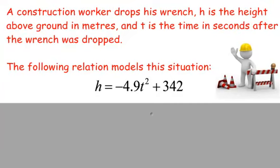H is the height above ground in meters, and T is the time in seconds after the wrench was dropped. Now it says the relation models this situation. The following relation models this situation, and here it shows you H is equal to negative 4.9 T squared plus 342. Right now, these are just numbers. We're not sure where they came from, but what we do know is that H is the height. Normally, we would say Y would go right there, and T is the time in seconds.